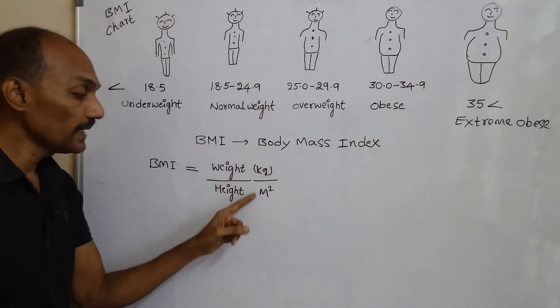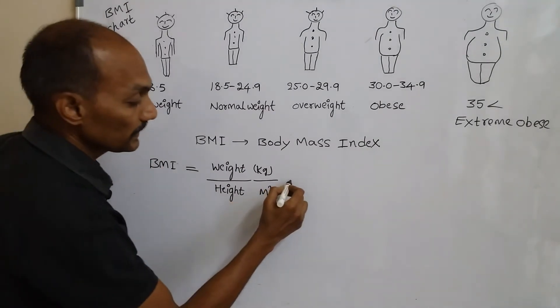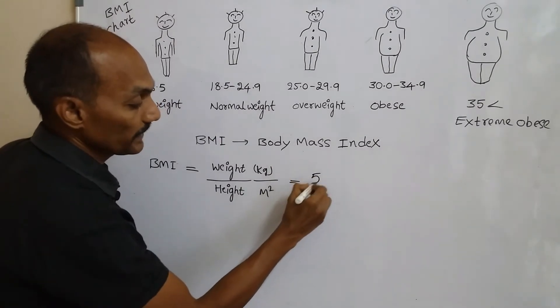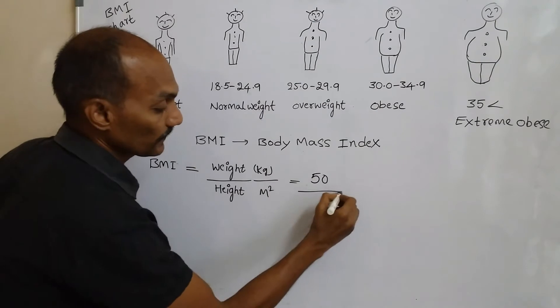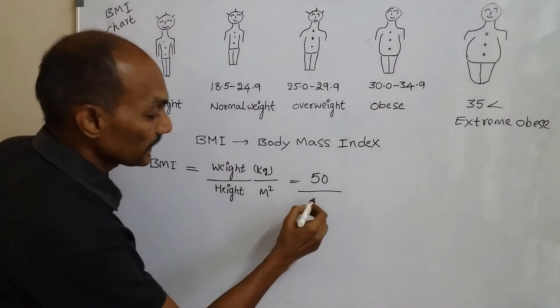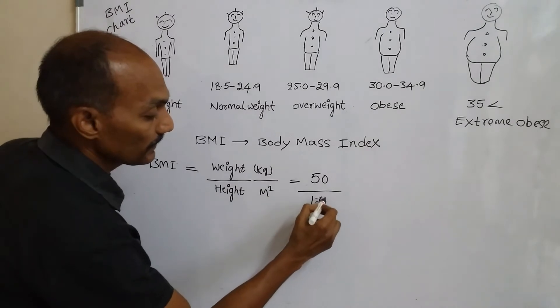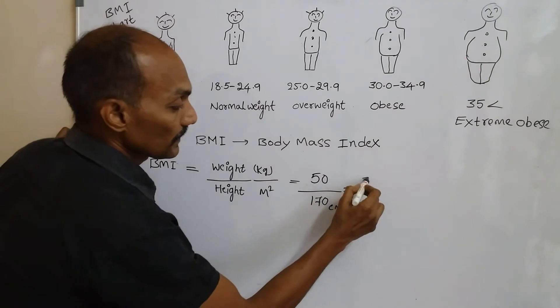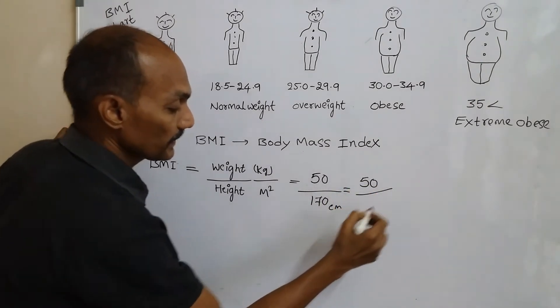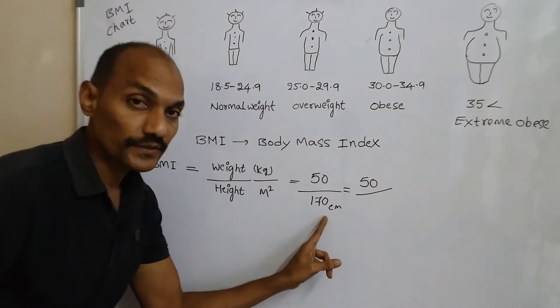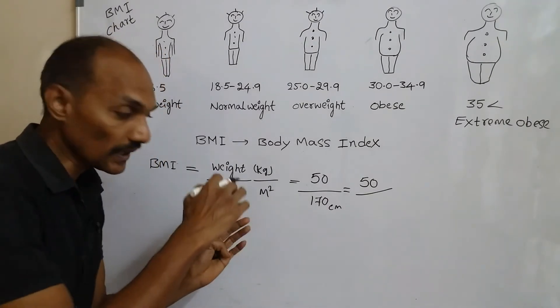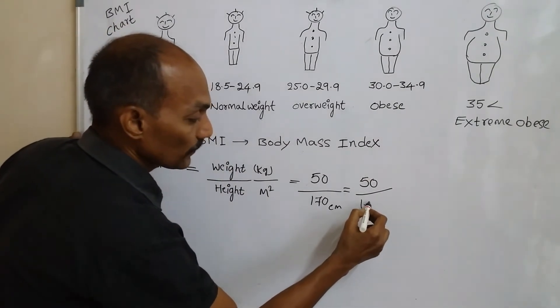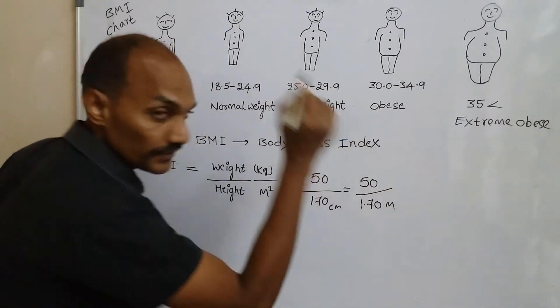For example, here one person is 50 kilograms in weight and his height is 170 centimeters. We have to take the weight as it is - 50 kilograms. Here the height is given in centimeters, but we have to convert the centimeters into meters, so then after conversion it would be 1.70 meters.